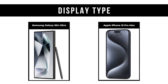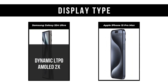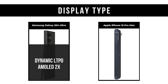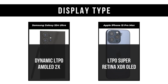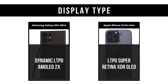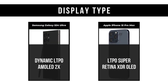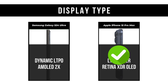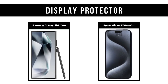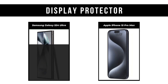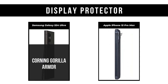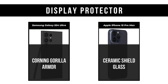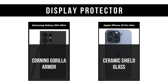Display Type: Samsung Galaxy S24 Ultra is Dynamic LTPO AMOLED 2X; Apple iPhone 15 Pro Max is LTPO Super Retina XDR OLED. Display Protector: Samsung Galaxy S24 Ultra is Corning Gorilla Armor; Apple iPhone 15 Pro Max is Ceramic Shield Glass.